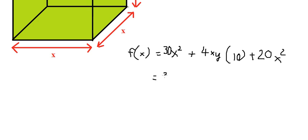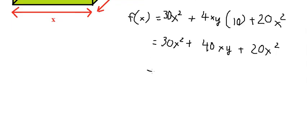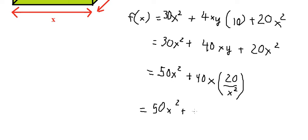Now we can simplify. About y, we need to change it using our equation. So 30 and 20, we have 50. So we can simplify and we have 800 over x. And this is the final answer we need to find.